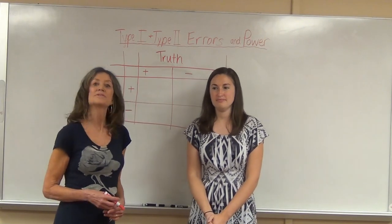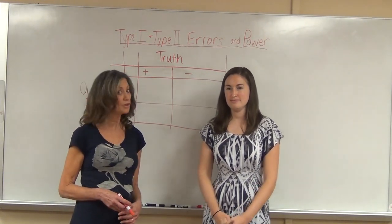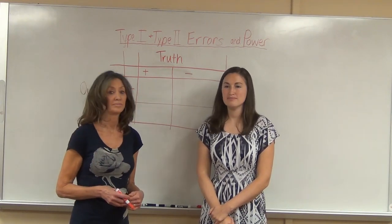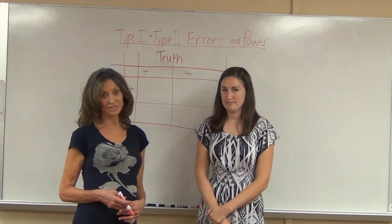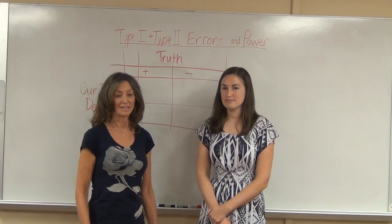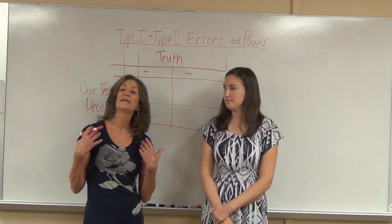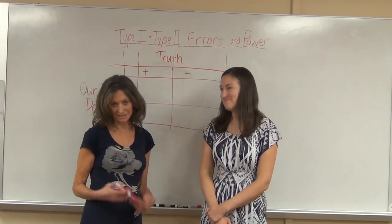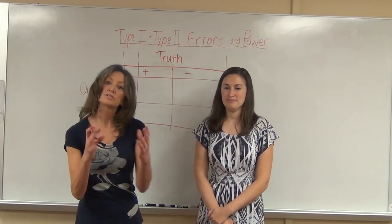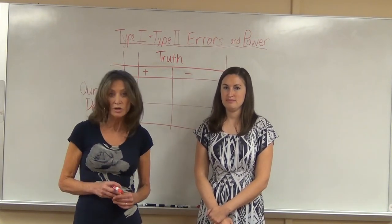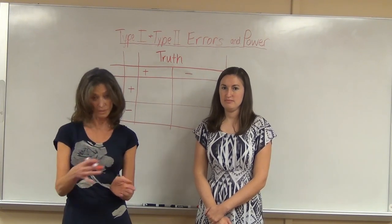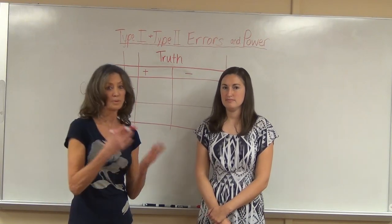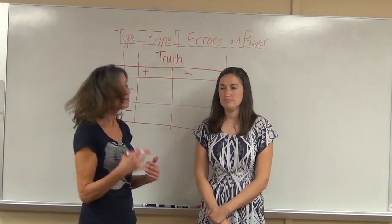The null hypothesis is always the hypothesis of no effect — the treatment did not work. If you're testing for a disease, you do not have the disease. If you're testing whether somebody's innocent or guilty, it's always the null hypothesis — not guilty, no effect. And the alternative is always that there is an effect: the treatment did work, the defendant is guilty, the person has the disease.